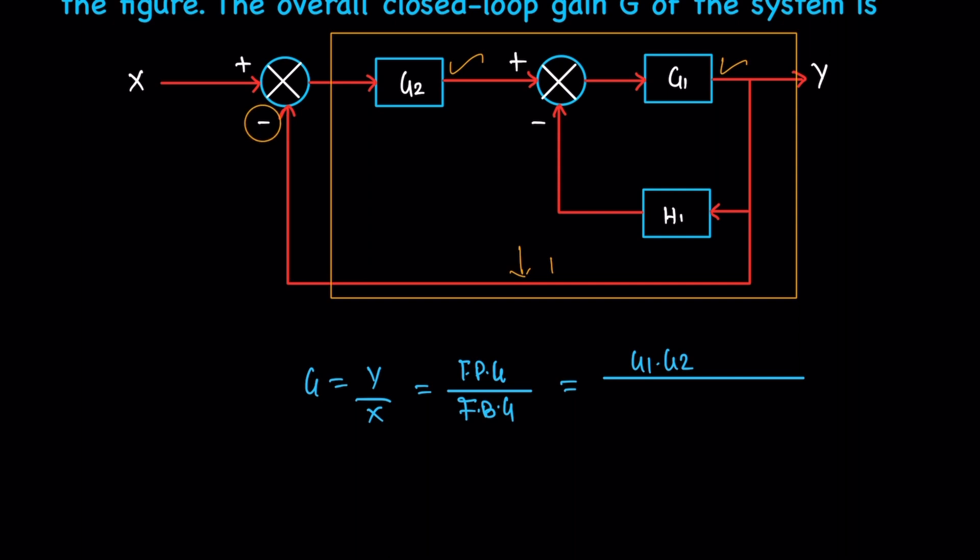The feedback is negative, so the result is positive: 1 plus G2 G1. Now for the next feedback based on the second summing point.